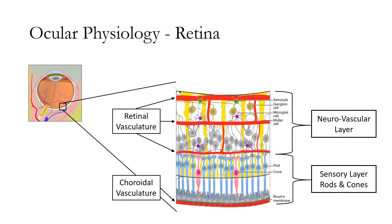With more magnification, we see the vascular supply or blood flow of the retina. The inner neural layer of the retina is made up of astrocytes, ganglion, bipolar, microglia, and Mueller cells, which are supplied by the retinal vasculature. The outer neural layer of the retina is composed of the rods and cones that are supplied by diffusion from the choroidal vasculature. These layers are referred to as the inner neurovascular layer and the outer sensory layer.